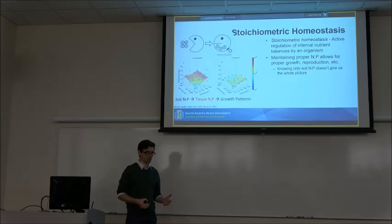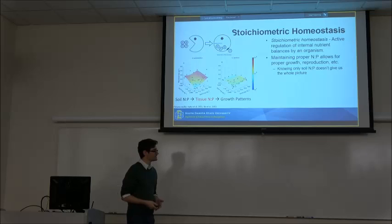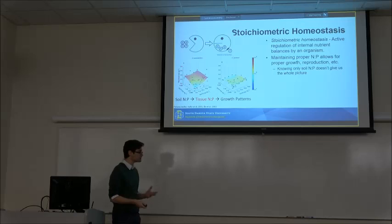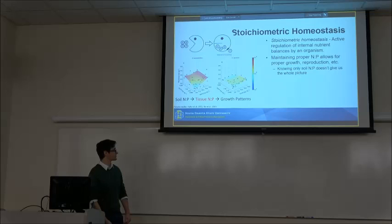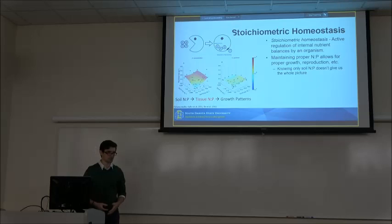That introduces us to the idea of stoichiometric homeostasis, which is this active internal regulation of nutrient balances by an organism. Organisms have some supply of nutrients given to them and they need to change those ratios to get the balance they need for proper growth and reproduction. Often in the literature you see relationships that examine the N:P ratios in the soil and compare that to some plant growth parameter, but this misses the central link of tissue N:P ratios. Knowing what's in the tissue might give us a better explanation or fit to the plant growth parameters we observe. It's crucial not only to understand what's in the tissue, but the level of homeostasis that's getting us from what's in the soil to what's in the plant.